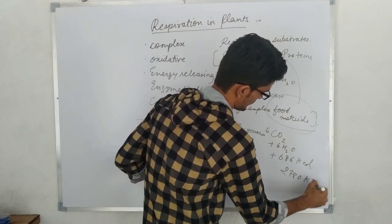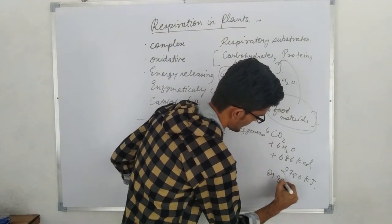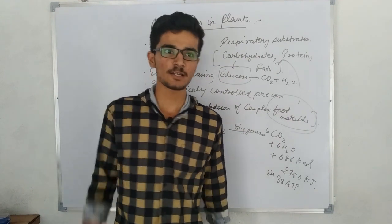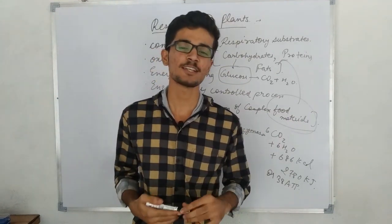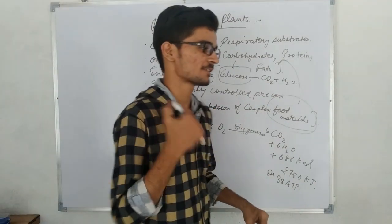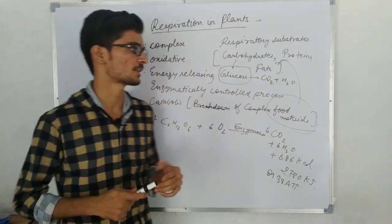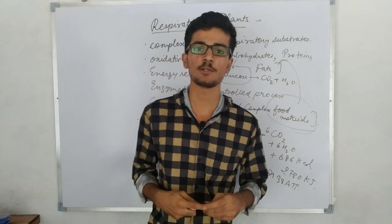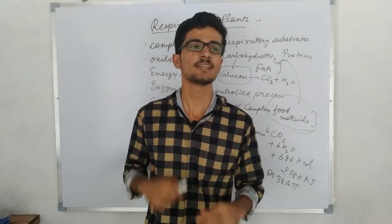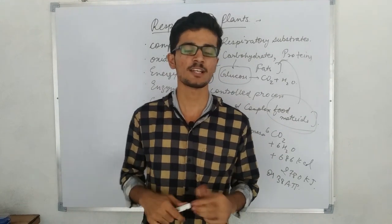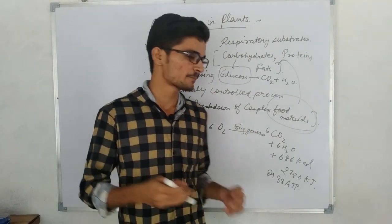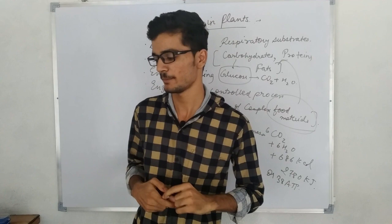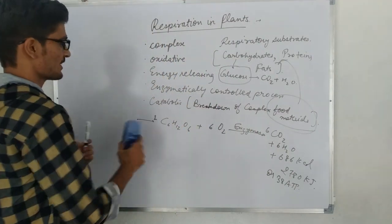The energy released is equal to 686 kcal or 2780 kJ, or we can write it as 38 ATP. Some books say 38 ATP, some say 36, and the internet says 36. Earlier 38 was taught, now 32 is used. But when I counted through all four processes of respiration completely, 38 ATP comes out. The difference of 36 or 32 depends on what value we assign to NADH. If we consider 1 NADH equal to 3 ATP, then 38 ATP is generated from the complete breakdown of one glucose molecule.